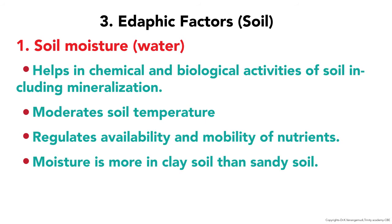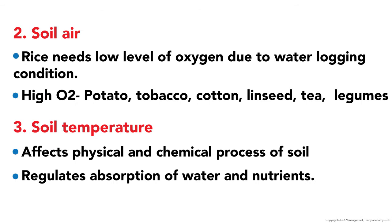The third factor is edaphic factors, that is soil factors. The first is soil moisture, which helps in chemical and biological activities of soil including mineralization, moderates soil temperature, and regulates availability and mobility of nutrients. Moisture is more in clay soil than in sandy soil. Soil air: rice needs low levels of oxygen due to waterlogging conditions, while potato, tobacco, cotton, linseed, tea, and legumes need high oxygen. Soil temperature affects physical and chemical processes of soil and regulates absorption of water and nutrients.